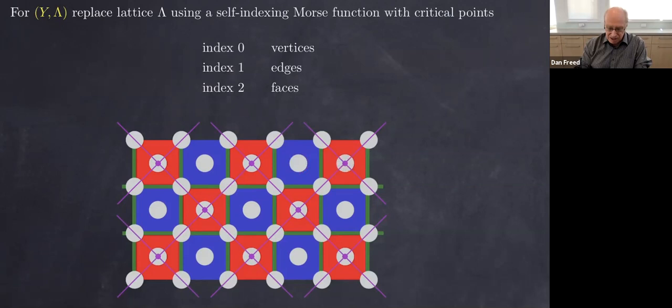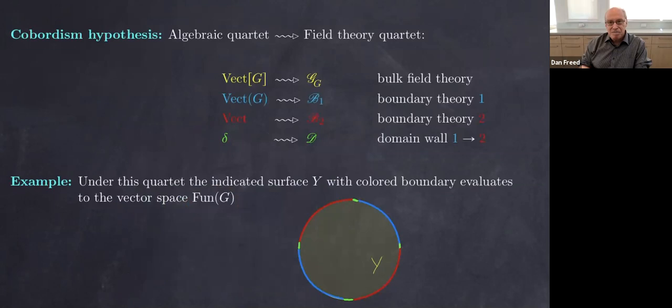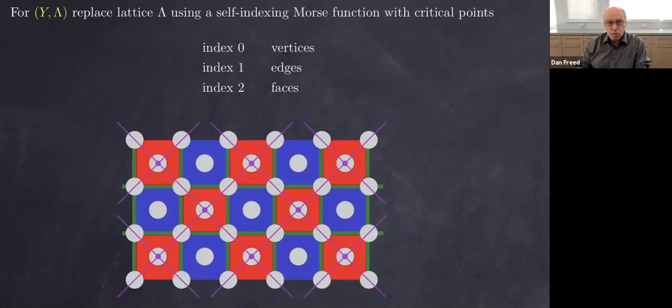At each edge we have the possibility of inputting a function on the group — those are our weights. If you actually evaluate this using those weights from the function we started with, what you find is exactly the Ising partition function. We've put the Ising partition function entirely in this topological field theory, completely in topology. A physicist anticipated this kind of picture 20 years ago, though without the technology of extended field theory that we now have.